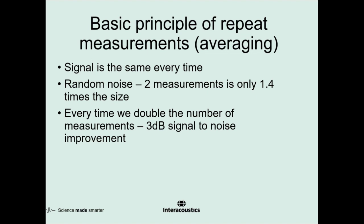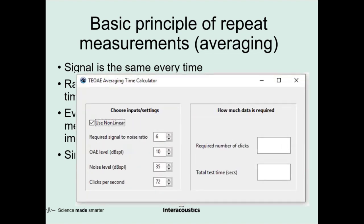Using this basic physical rule of signal averaging, I've written a small application which allows us to estimate the test time for any given level of signal and noise. Here is a screenshot, and we can see that we can specify the signal to noise ratio we want, what the OAE level is, what the noise level is, and how many clicks per second we are using — and from that it will tell us how long the test takes.